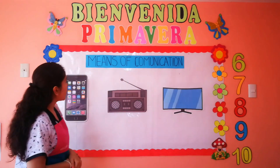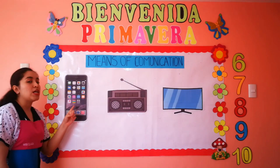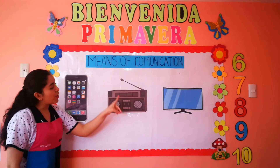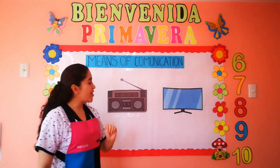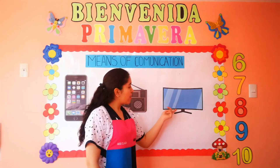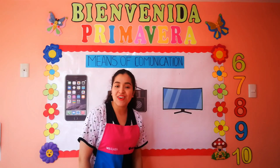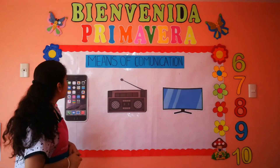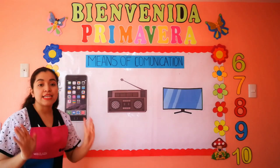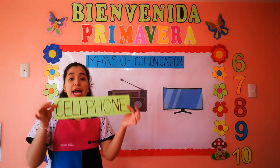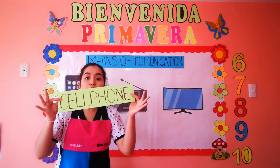Veamos a quién tenemos por aquí. Es un celular. Por aquí tenemos a una radio. ¿Y cómo se llama este? Televisor. Excelente. Celular en inglés se dice cell phone. Repite: cell phone.